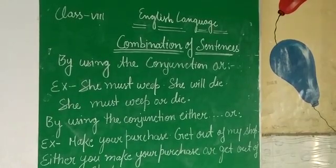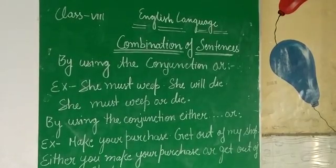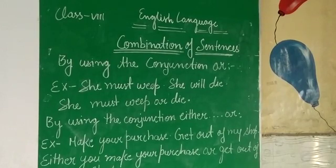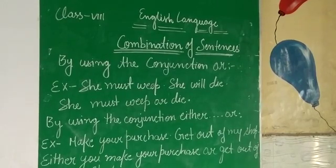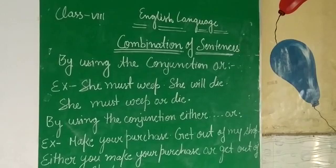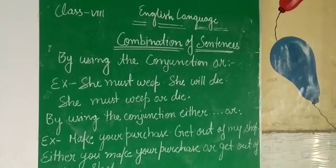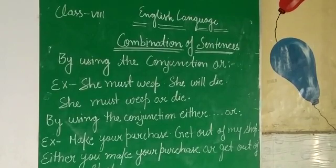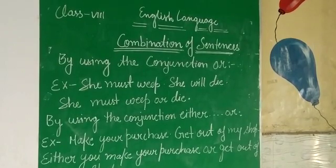Next example: he has made a mistake. His brother has made a mistake. Two sentences. Combined: either he has made a mistake or his brother has.